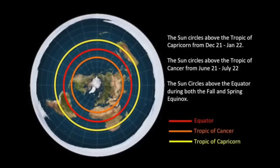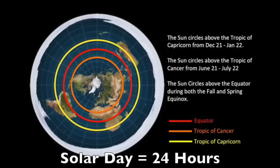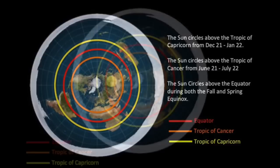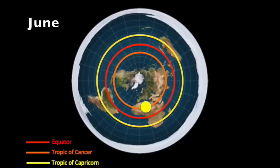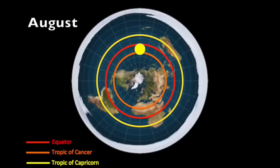I've gone over the sun in the past, so you might know a little bit about this subject. The sun goes around in a circle, and it takes 24 hours for the sun to circle the flat earth in one day. The sun's circles get bigger and smaller depending on the time of year. In June, the sun is circling over the Tropic of Cancer, so it's got a much tighter circle. In December, the sun is circling over the Tropic of Capricorn, so it's got a much bigger circle.